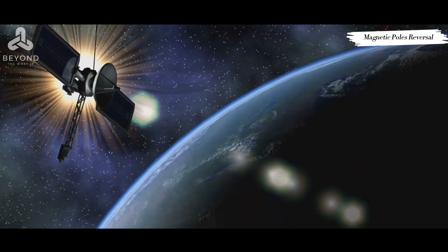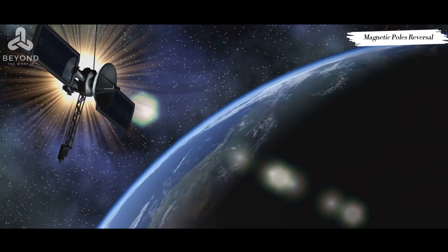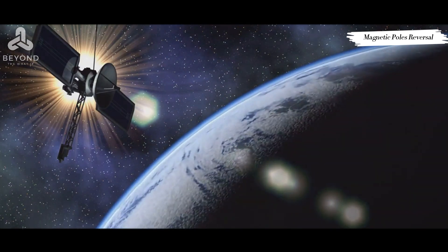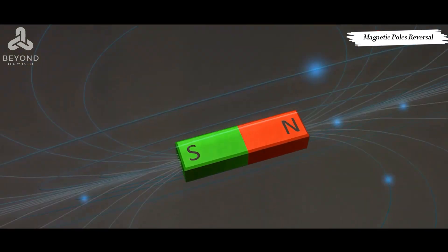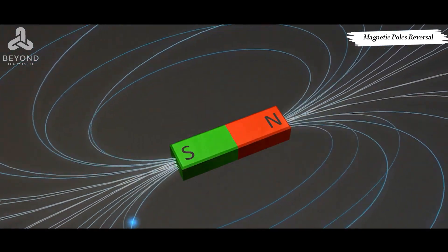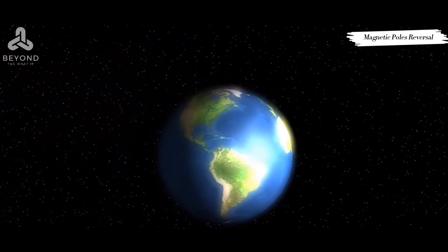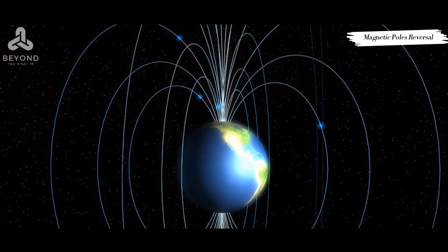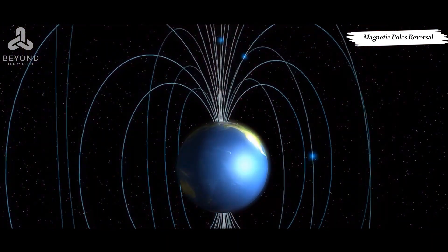But what does this mean for us and life on Earth as we know it? Let's dive deep into the heart of our planet to find out. Imagine the Earth as a massive spinning ball of iron, nickel, and other metallic materials. The outer core of our planet is a thick layer of molten metals constantly in motion due to the Earth's rotation and convection currents.